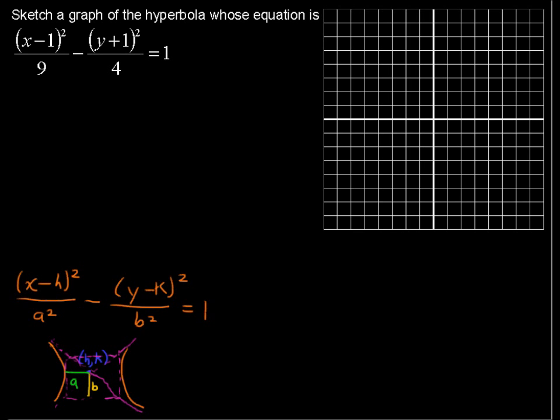Now, if on the other hand we have (y - k)² - notice that the k sticks with the y, that becomes important - and now in the denominator, some books you'll see an a², some books you'll see a b² here. I'm going to put b² just to stay consistent, to let us know that whatever is under the y, whatever is squared under the y goes up or down.